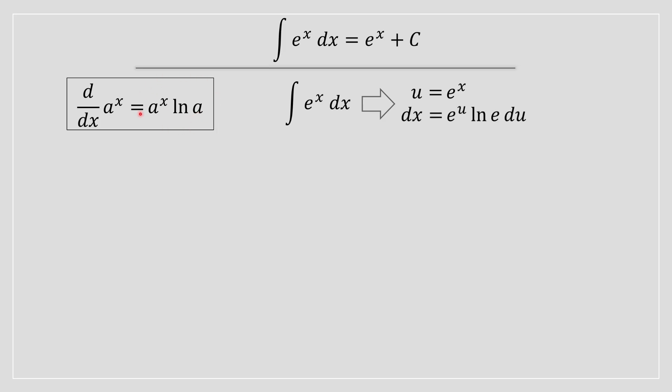When you apply this rule, what you're going to obtain is this. The natural log of Euler's number is just going to be equal to 1. So really, what you're looking at is dx equals du divided by e to the power of x.